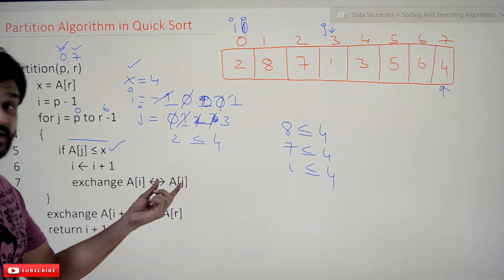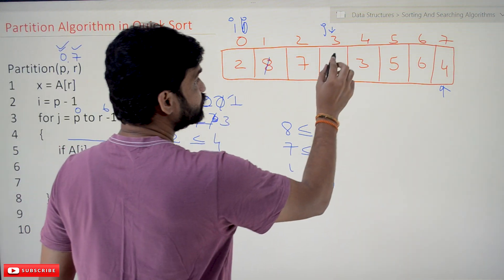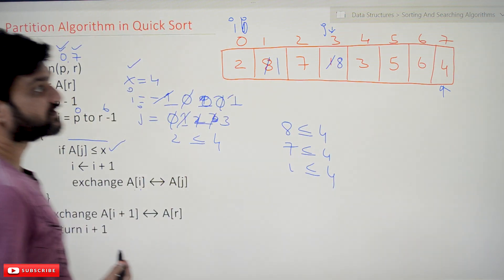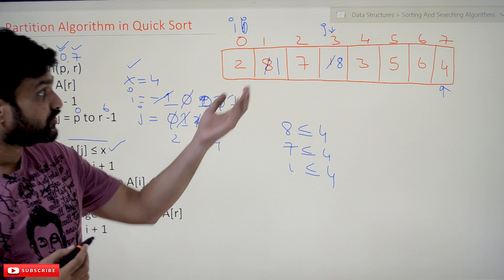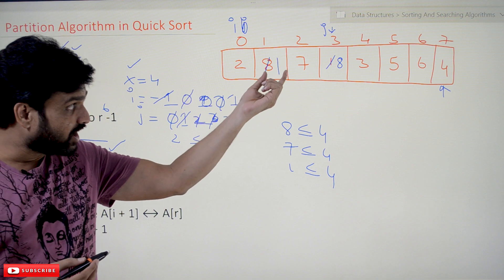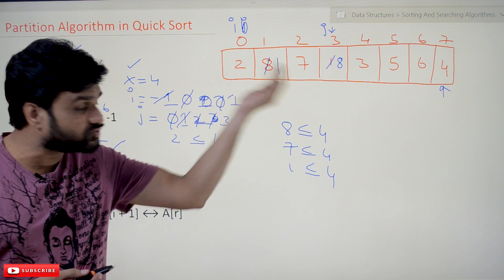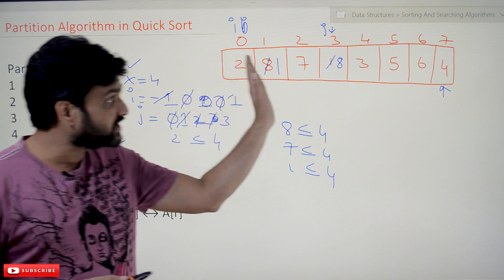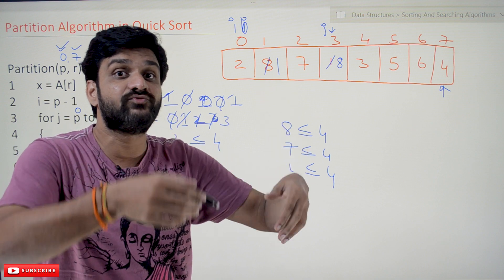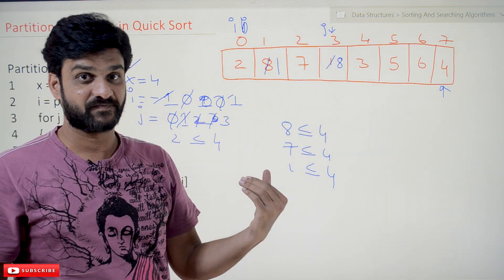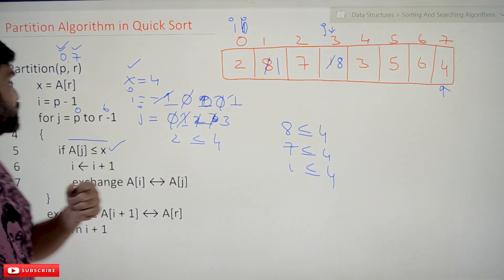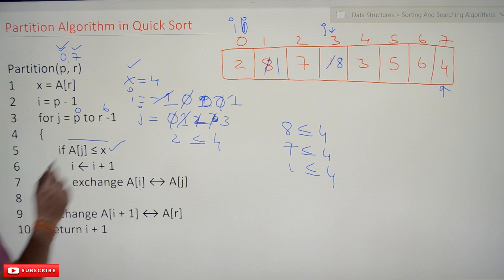We exchange a[i] (a[1] = 8) with a[j] (a[3] = 1). So index 1 becomes 1 and index 3 becomes 8. What has happened here is: all elements less than 4 are shifting to the left-hand side, and all elements greater than 4 are shifting to the right-hand side, and the pivot element is going to find its correct position. This is the beauty of the partition algorithm.